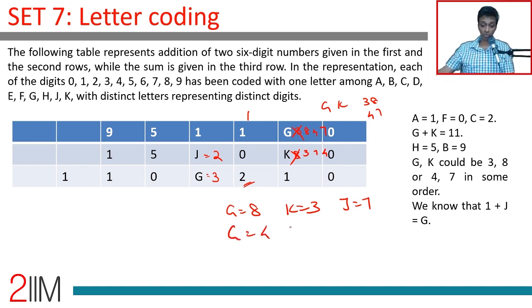G could be 4. In which case K would be 7. And J would be 3. This is also fine. No other letter that is 7 or 3.